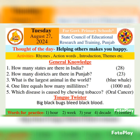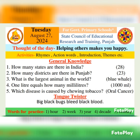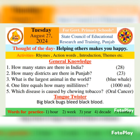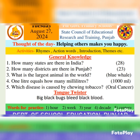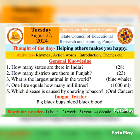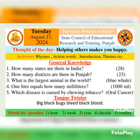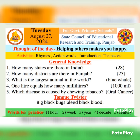Now words for practice. Our first word is 'hour' — H-O-U-R. Hour means kanta. Second word: 'week' — W-E-E-K. Week means hafta. Third word: 'year' — Y-E-A-R. Year means saal. Fourth word: 'decade' — D-E-C-A-D-E. Decade means dashak. And fifth word: 'century' — C-E-N-T-U-R-Y. Century means sadi.